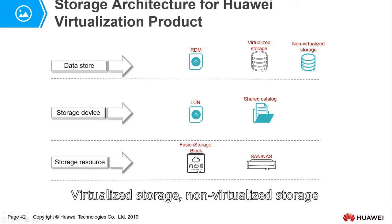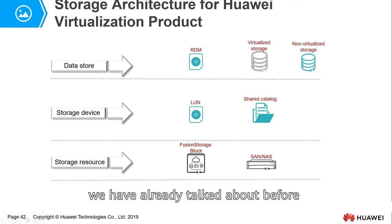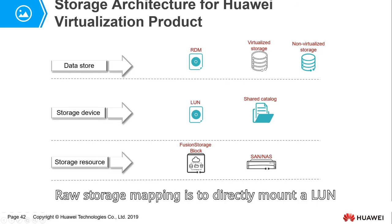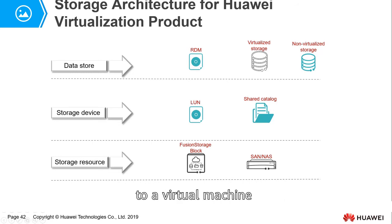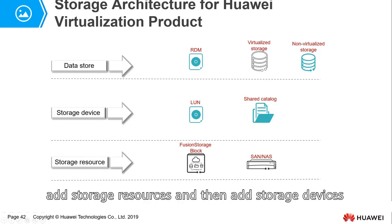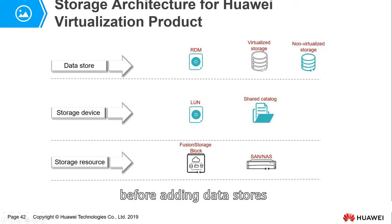Virtualized storage and non-virtualized storage we have already discussed. Raw device mapping is directly mounting a LUN to a virtual machine — this is called raw device mapping. You manually add storage resources, then storage devices, then data stores, so the virtual machine can store data.